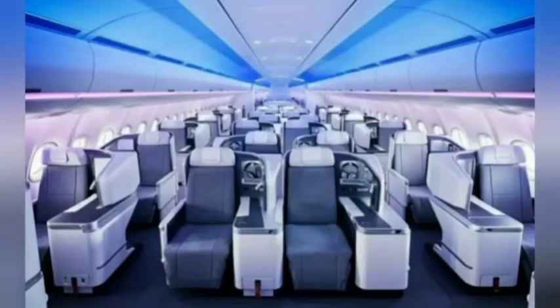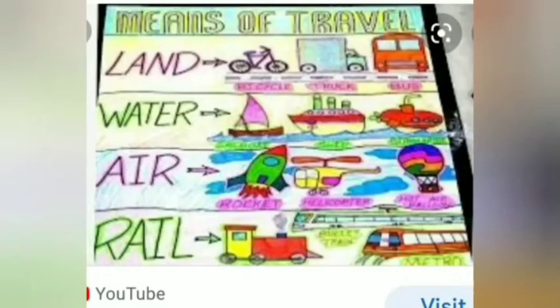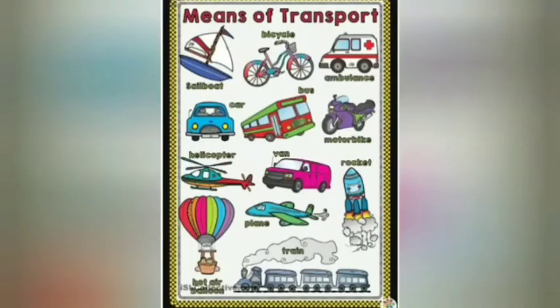Today we have learned four ways of transport: roadways, waterways, airways, and railways — these are the four modes of transport. Nowadays transport facilities are available in both village and city and it is very necessary. So these are the means of transport.